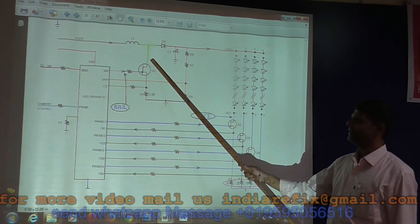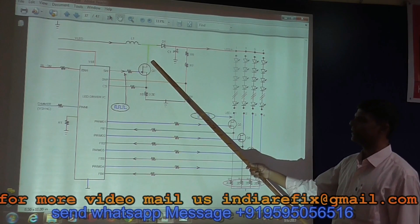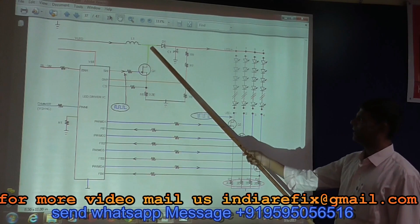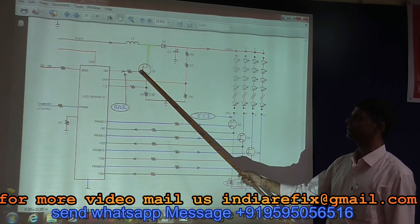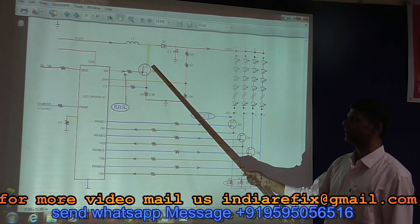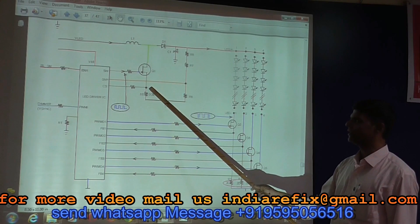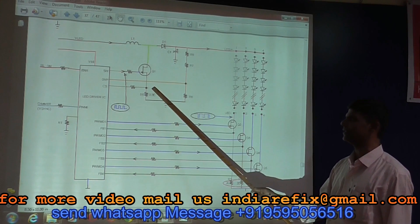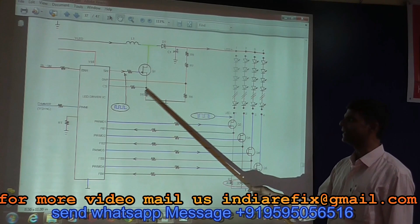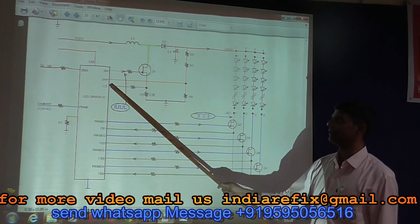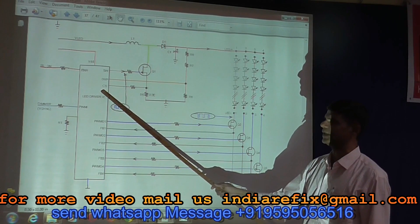At this terminal, over current protection is also provided. Whenever the IC conducts current more than the usual condition, the voltage across the resistance connected at the source increases, and that sense is given to the CS pin.